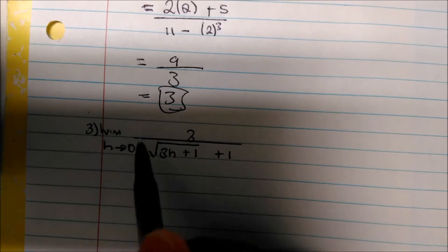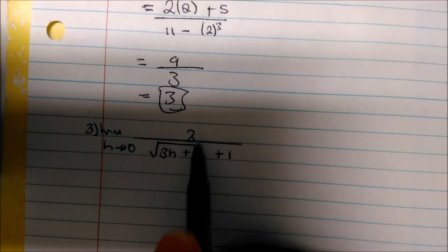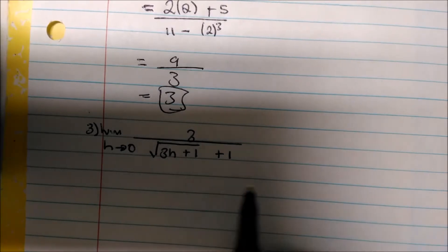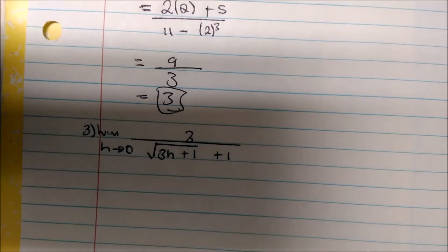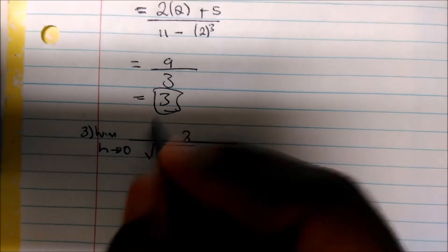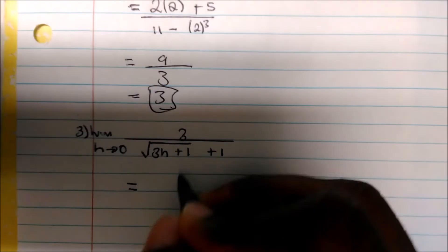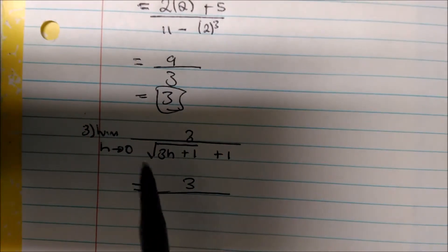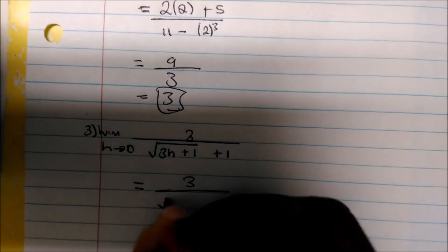Let's look at another one. The limit as h approaches 0 of 3 over the square root of 3h plus 1 plus 1. We see this and say, what the hell is going on? Well, if we plug in 0, we still don't have what's called an indeterminate form, so let's see. The limit is going to be equal to 3, and I'm going to drop my notation because I'm already plugging in 0.